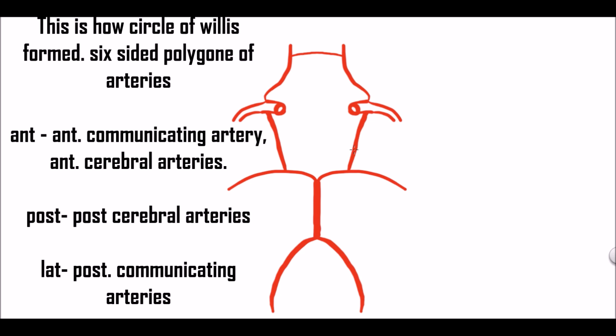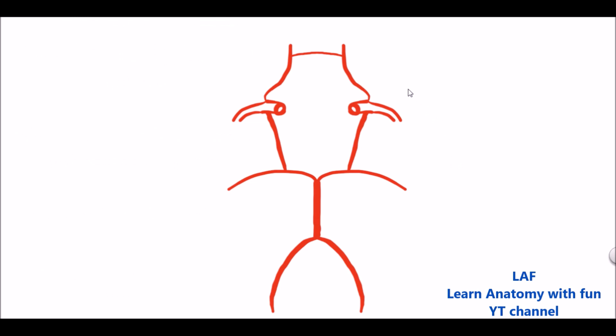It is a six-sided polygon of arteries, formed anteriorly by the anterior communicating artery and anterior cerebral artery, posteriorly by the posterior cerebral artery, and laterally by the posterior communicating arteries. It is also laterally formed by the internal carotid artery and its branches. Now let us see the branches of each artery one by one.